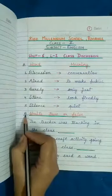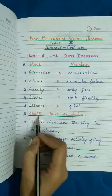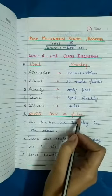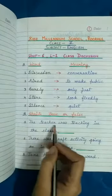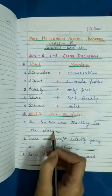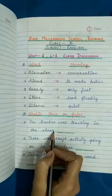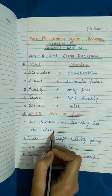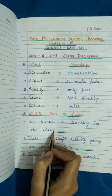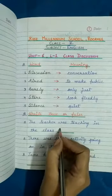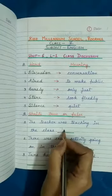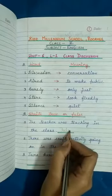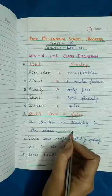Now we come to Part B, and it says write true or false. The first sentence is: the teacher was teaching in the class — teacher classmate padha rahi thi. So this statement is wrong. We write False here: F, A, L, S, E — False.